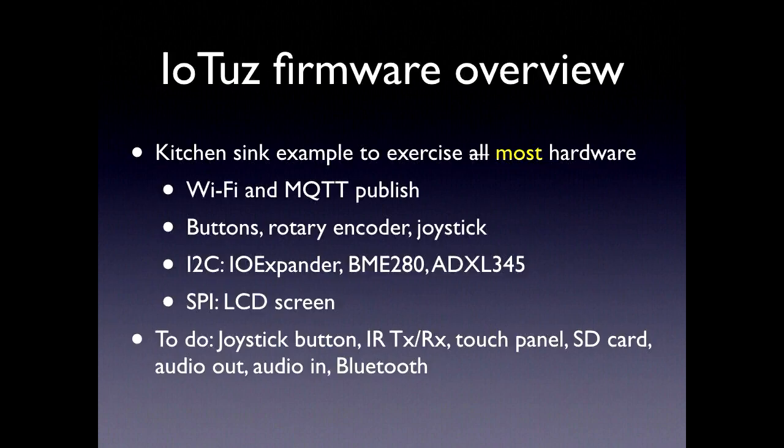The display does not go very fast over SPI — you're not going to get 30 frames per second of beautiful graphics; a full screen wipe you can watch cross the screen. In the IOTAS firmware example we've got, it's a bit of a kitchen sink showing you how to interact with most of the hardware. Working features include Wi-Fi, publishing over MQTT, buttons and rotary encoder, and some I2C peripherals. Things that don't work yet include the joystick button, infrared, touch panel, Bluetooth, and audio — but if we all work together, we'll perhaps get some of that going over the next few days.